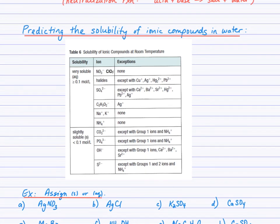To predict solubility of ionic compounds in water, we use a solubility guidelines table — it's part of your test reference sheet, on the back side, not the activity series of metals. There are three columns: solubility, the ion, and exceptions.